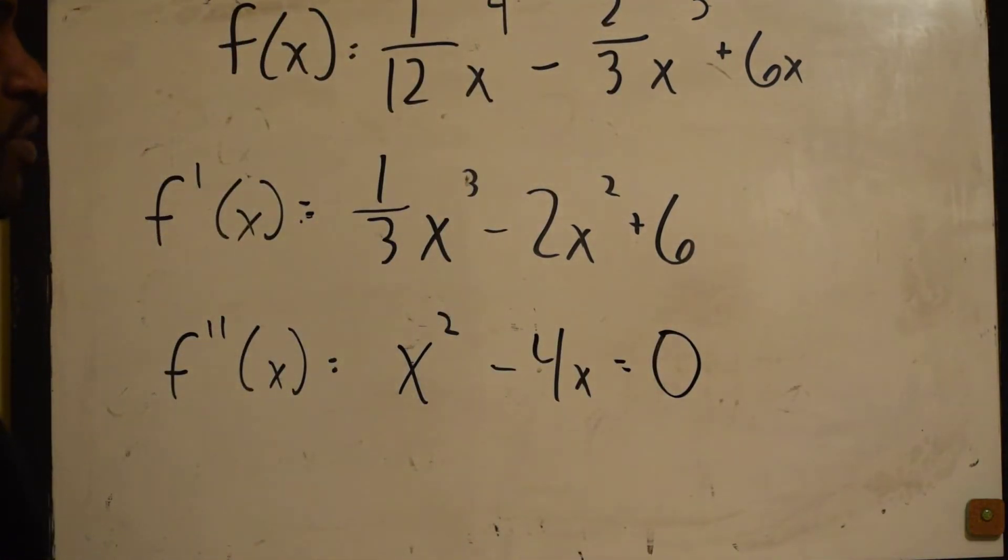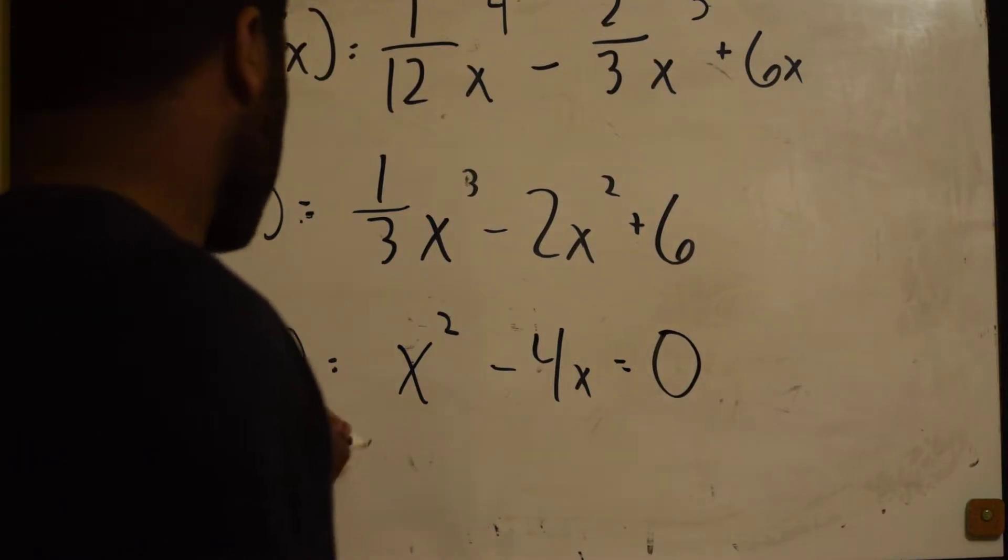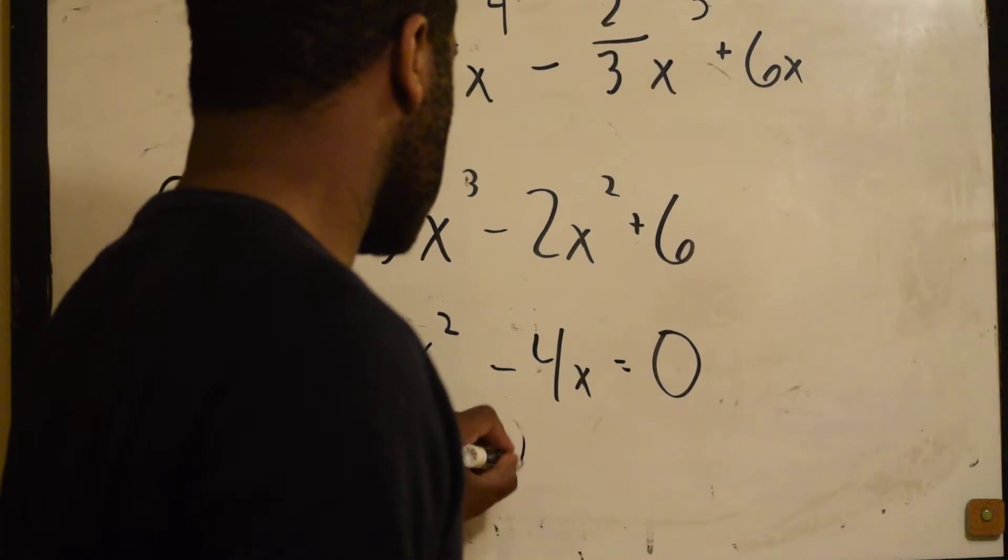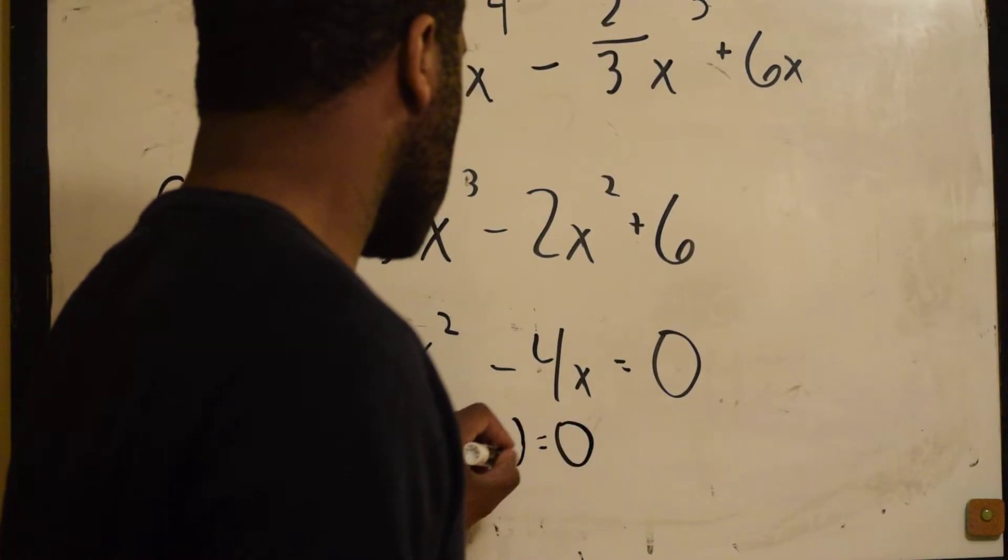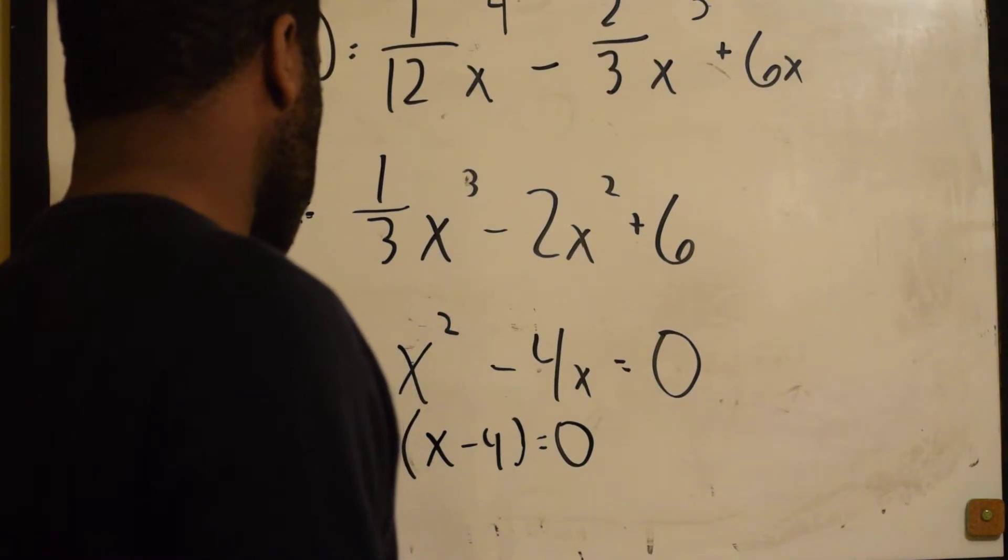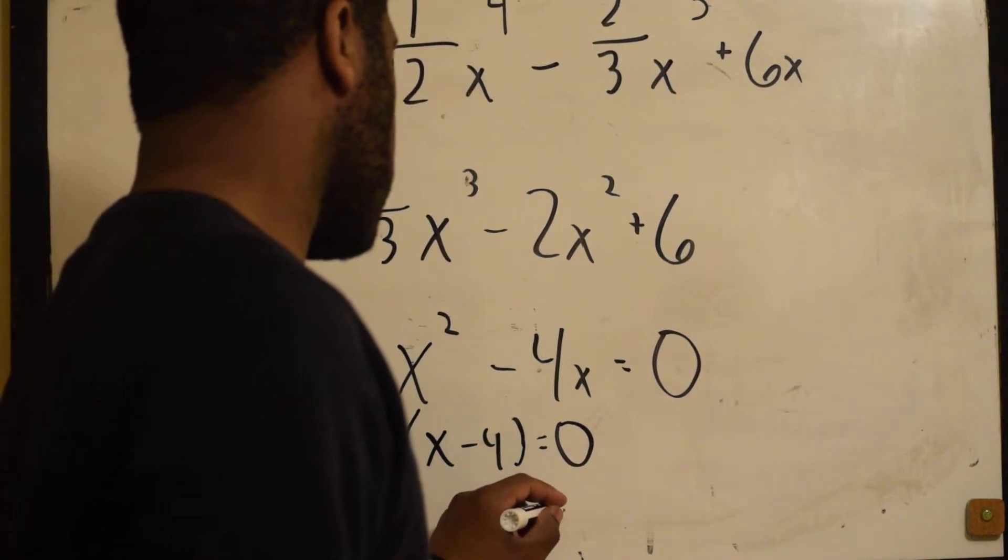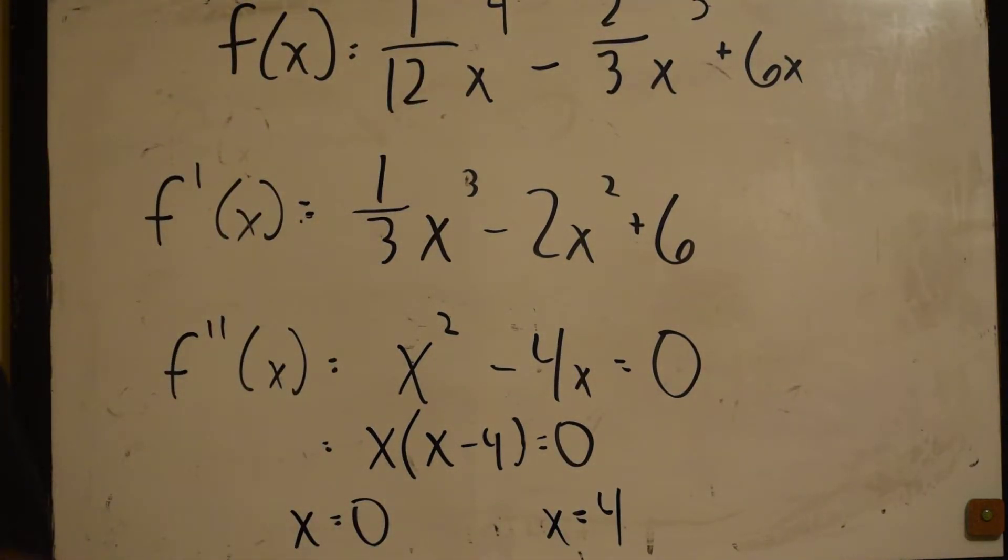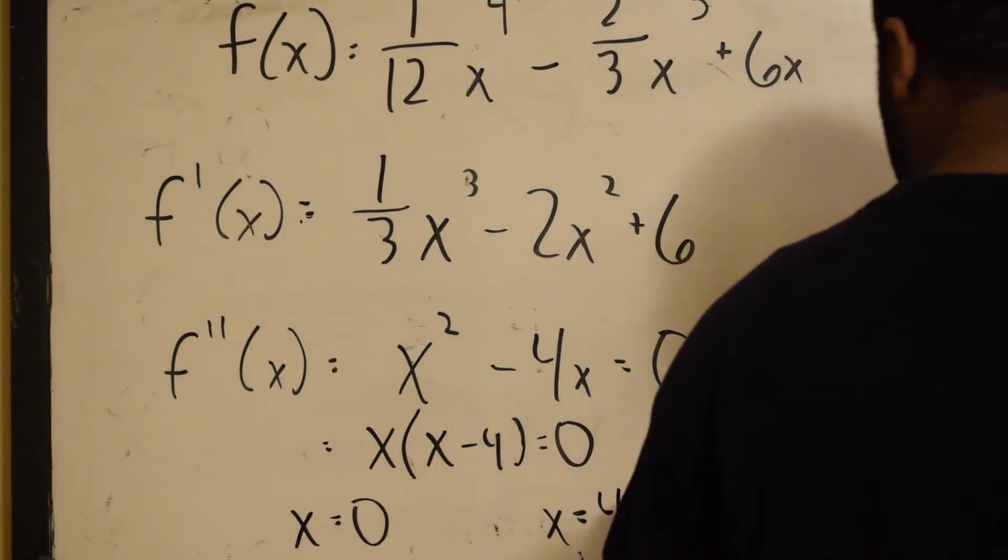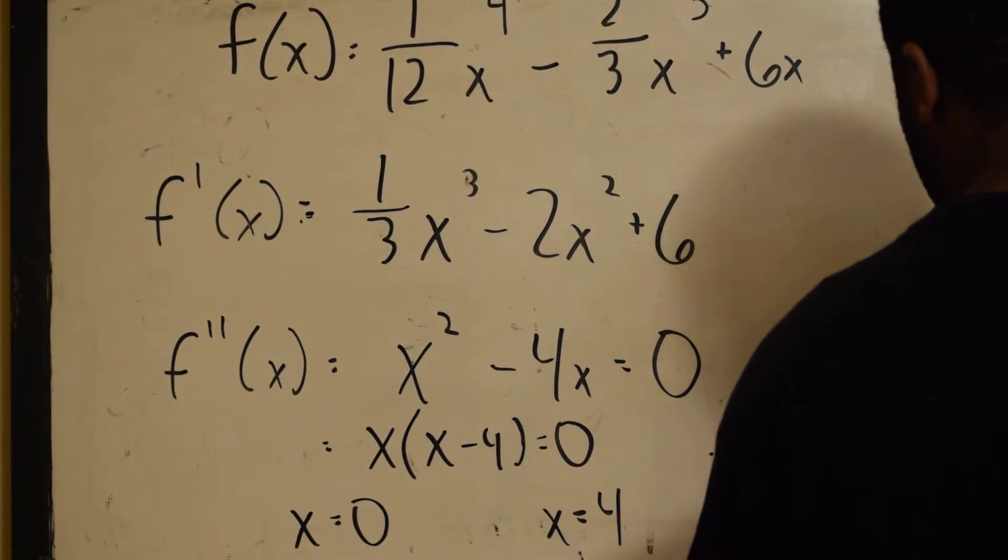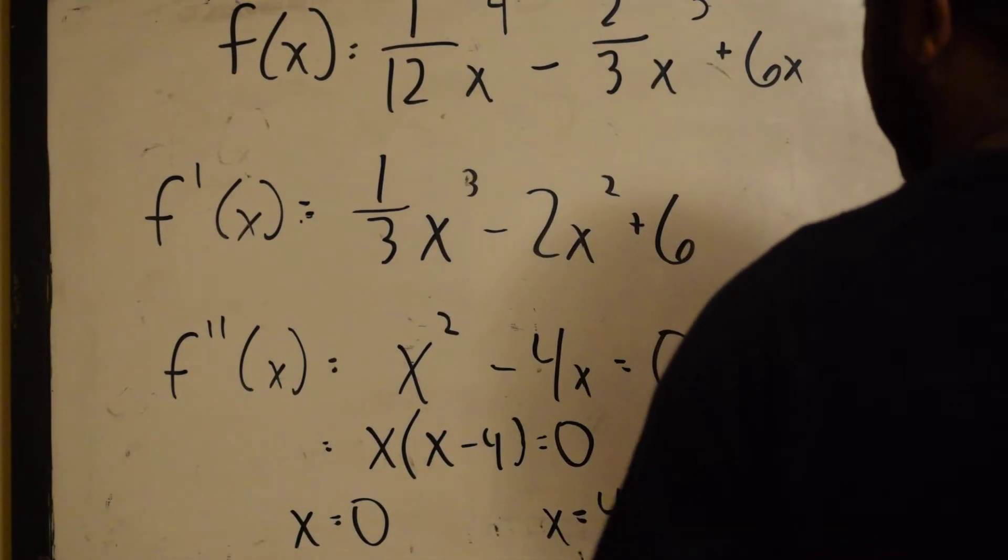We'll do it in one step to save space. Now, what's common? We factor out this x. x times x minus 4 is equal to 0. So our critical points are 0 and 4. I'm sorry, I said that wrong. Our inflection points are 0 and 4.